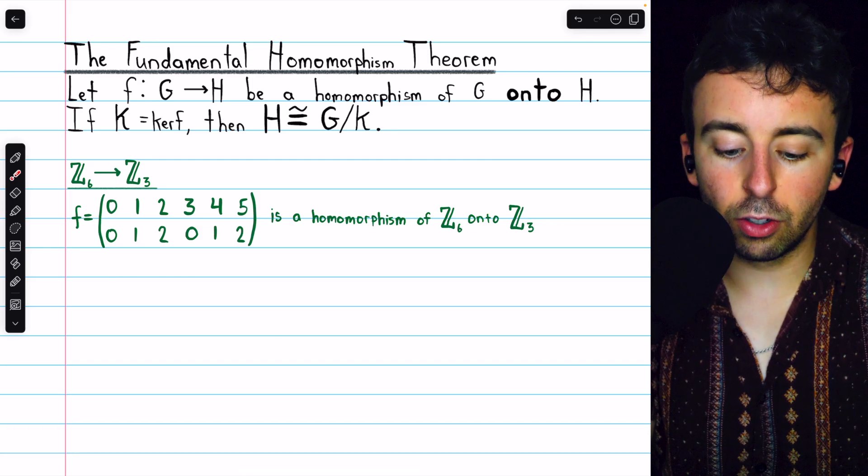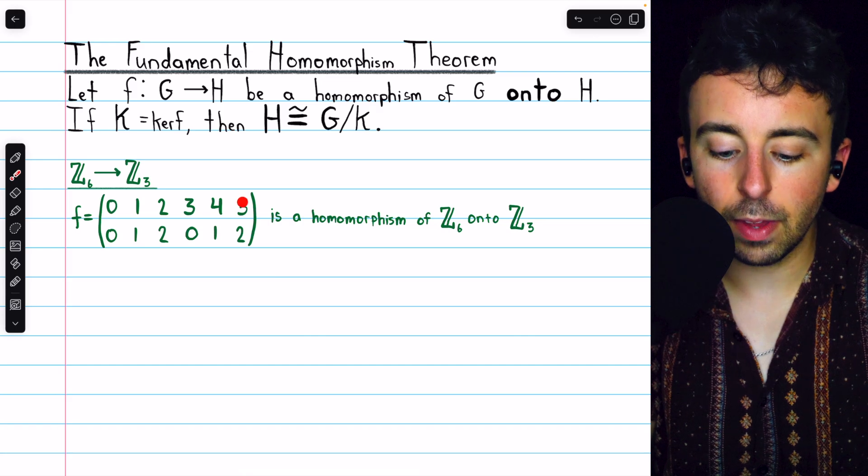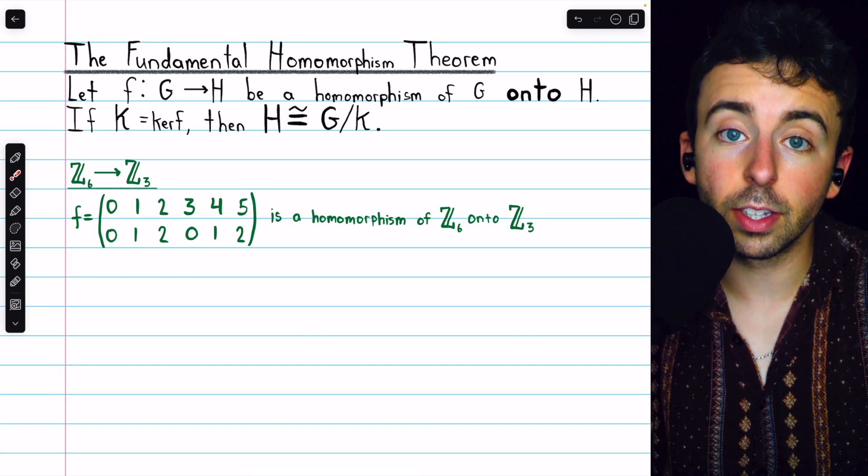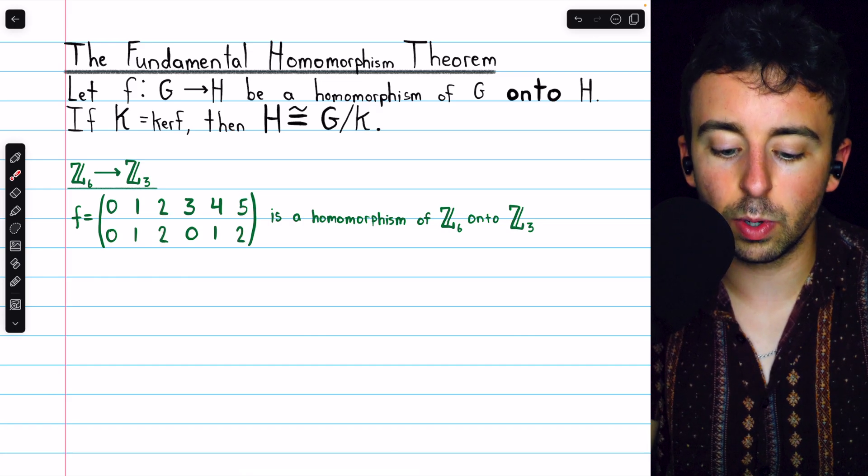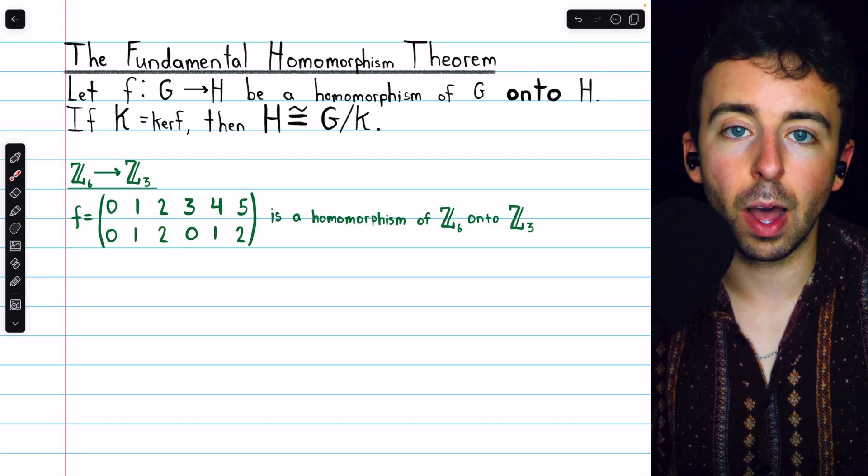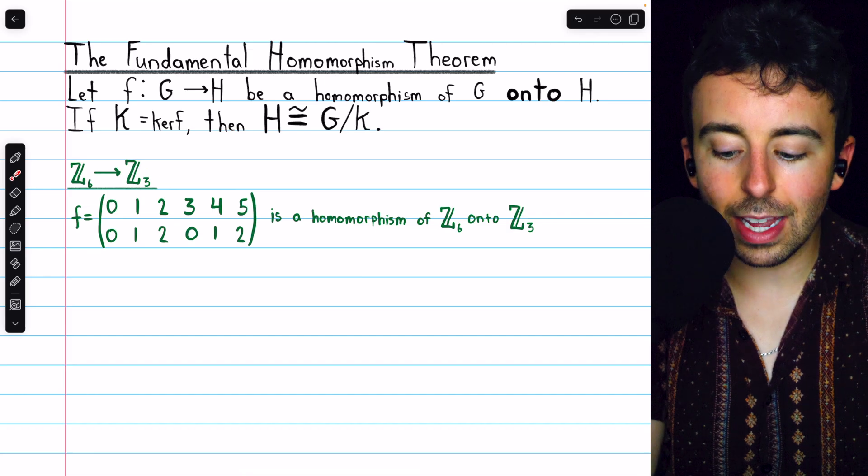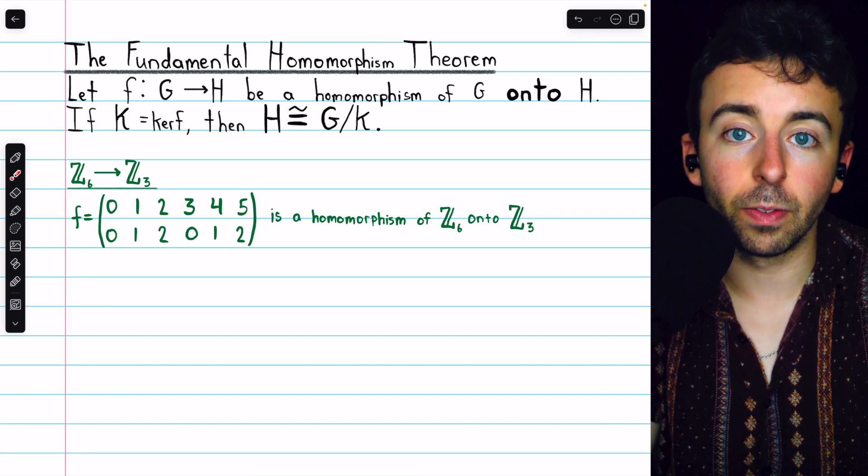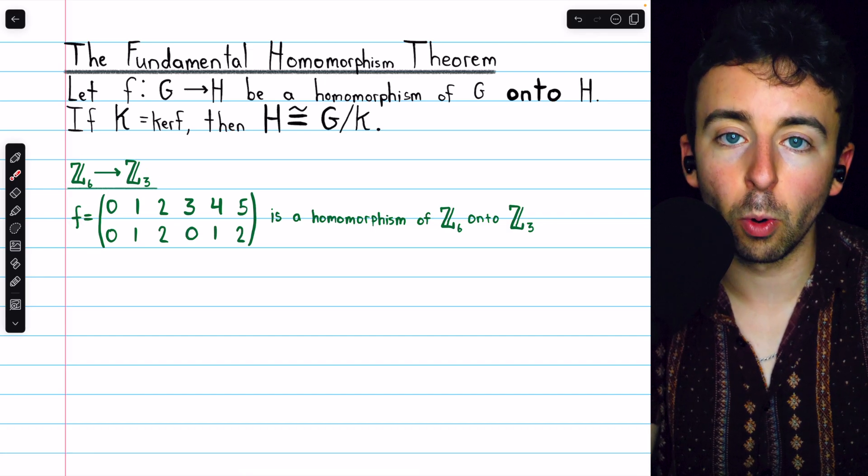Just as an example, 2 plus 3 is 5, and the image of 5 is 2. On the other hand, the image of 2 is 2 and the image of 3 is 0, and those also add to 2. This does preserve the group operation. So Z3 is a homomorphic image of Z6, and this is our homomorphism.